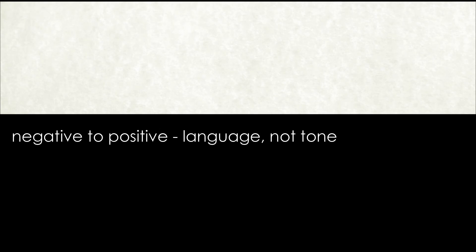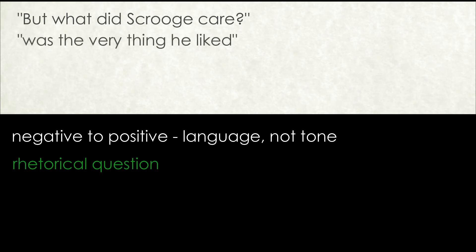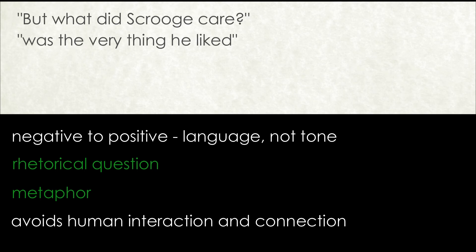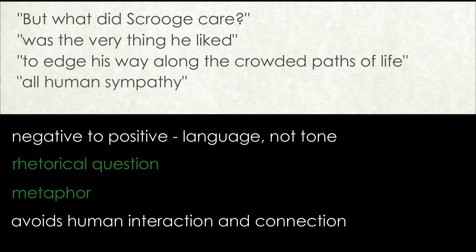The final paragraph switches from the negative to the positive, in language if not in tone, with the rhetorical question 'but what did Scrooge care?' Rather than finding out about what Scrooge is not, we find out what he is. We learn that to be ostracised in this way was the very thing he liked. Dickens uses a metaphor to describe the way in which Scrooge actively avoids human interaction and connection. He prefers to edge his way along the crowded paths of life, which not only evokes the busy thoroughfares of London alluded to in the preceding paragraph, but also communicates his decision to actively lead the life of an outsider, in which all human sympathy is bypassed. As he simply states to his nephew, 'I wish to be left alone.'